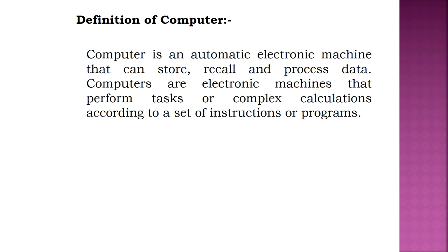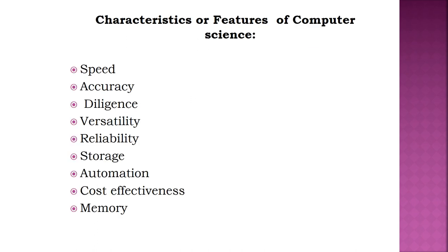After seeing the definition, let us look at the characteristics or features of computers. The first characteristic is Speed. A computer works with much higher speed and accuracy compared to human beings. A computer can process millions of instructions per second, and the time taken for operations is measured in microseconds and nanoseconds.